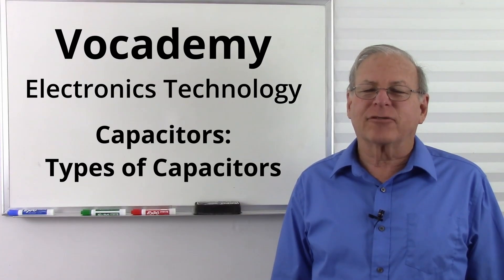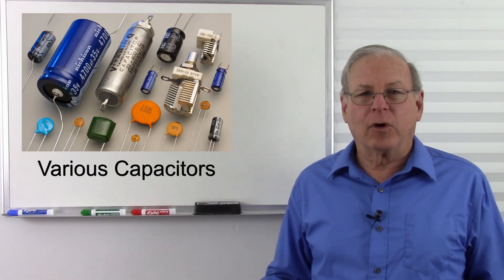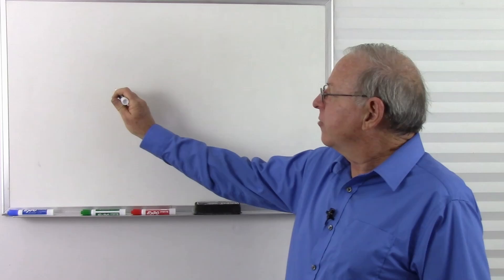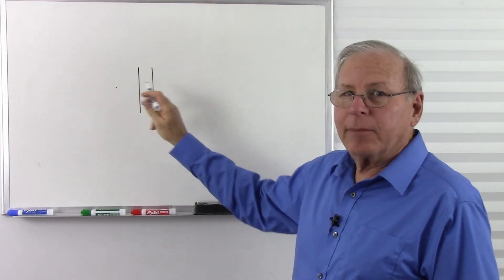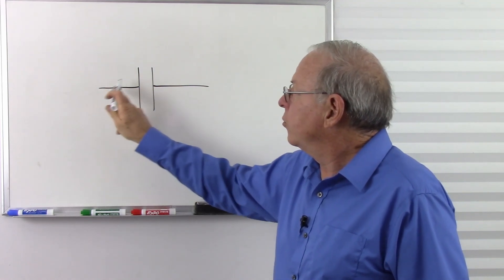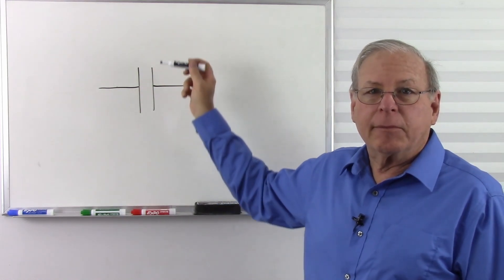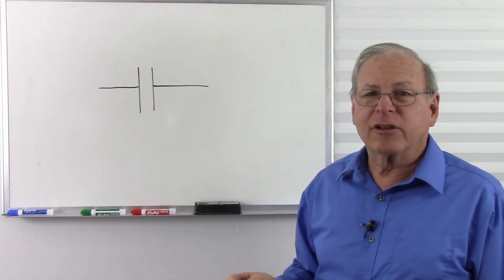Today I'm going to talk about types of capacitors. In the last video I talked about capacitor basics. Today I'm going to talk about how they are constructed. A quick review, a capacitor is essentially two conductors separated by an insulator, and the capacitor symbol is two parallel lines with perpendicular lines coming away from them to represent the conductors that are separated by the insulator.